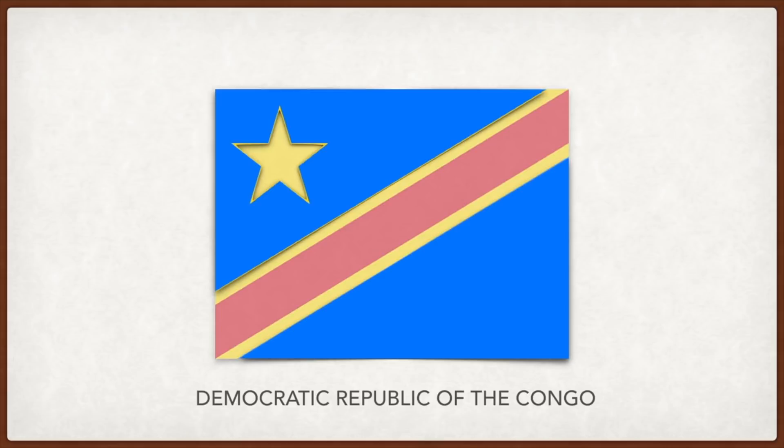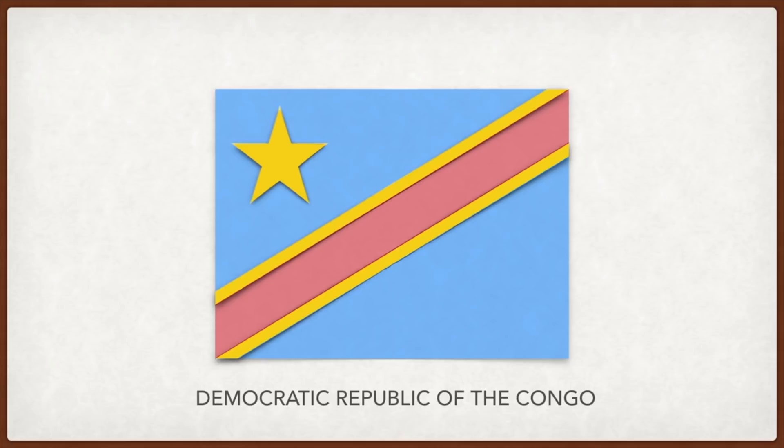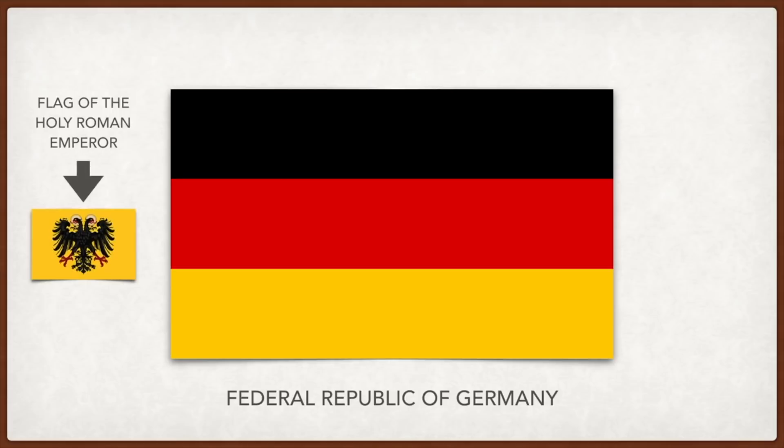The Democratic Republic of the Congo: blue stands for peace, red for the blood of the country's martyrs, yellow for the country's wealth, and the star for a radiant future for the country.